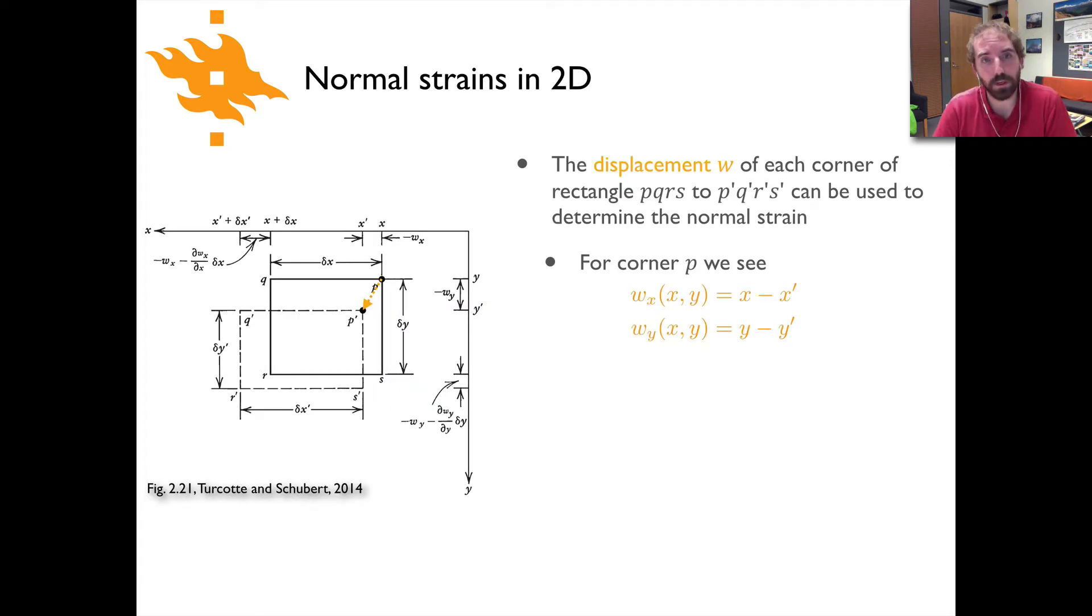So we'll start with our picture of normal strains in two dimensions. It's a bit of a complicated diagram here out of the Turcotte and Schubert textbook, but we'll step our way through this. If you'd like you're welcome to also pause the video at this point, take a look at the picture, and get yourself oriented before continuing on in the lecture.